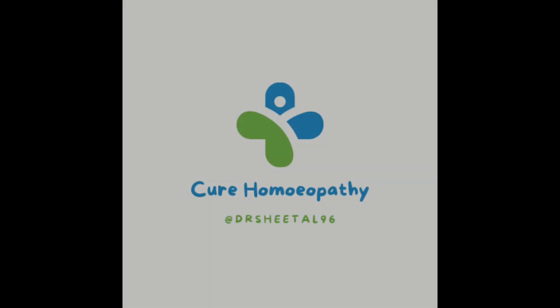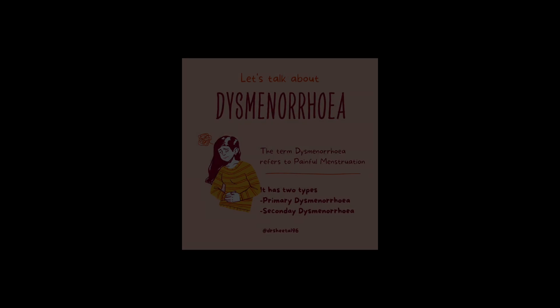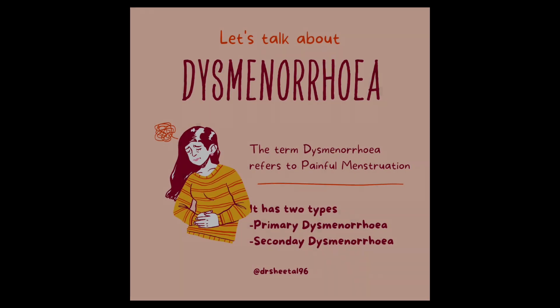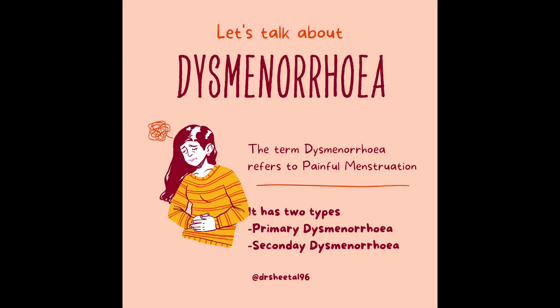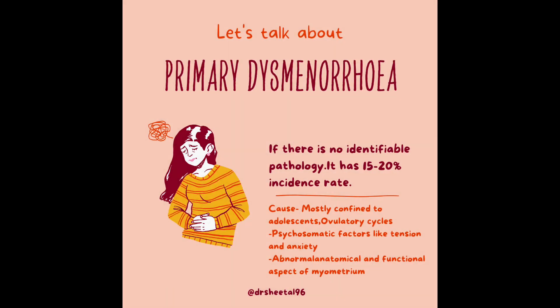Today we will discuss dysmenorrhea. The term dysmenorrhea refers to painful menstruation. It has two types: primary dysmenorrhea and secondary dysmenorrhea.